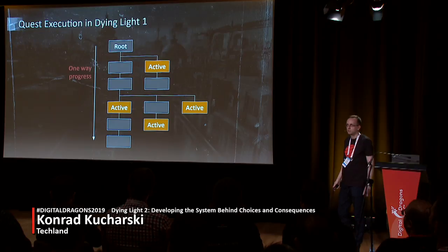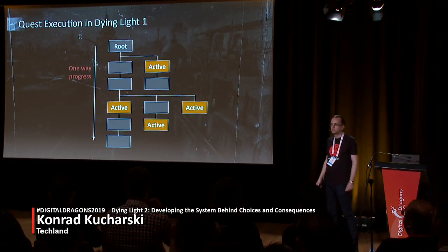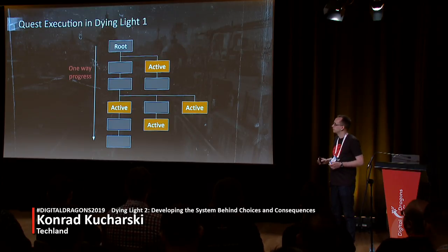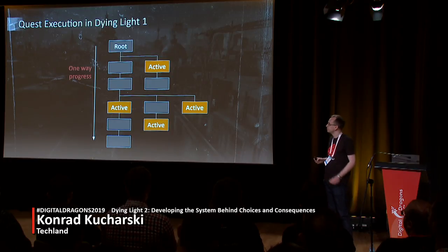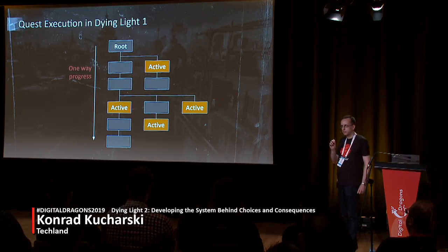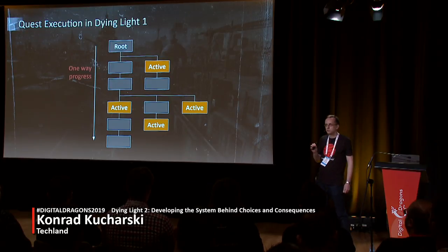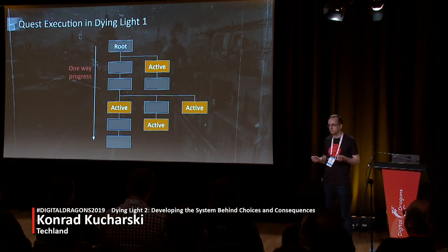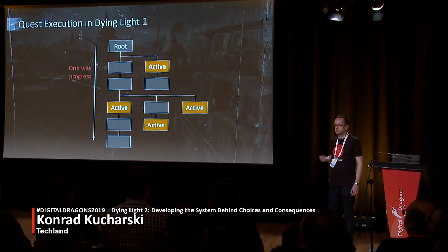Before I tell you how quests work in Dying Light 2, you need to understand how they worked previously. Our quests could only progress forward — we started from a root node and slowly progressed until we reached all the leaf nodes. We used a very important property of a tree: there is only one path connecting each node with the root. We used this to make jumps to any quest in the story by simulating everything on the path connecting the root with that quest. We called that feature invokes, and it was a really great way to test our game.